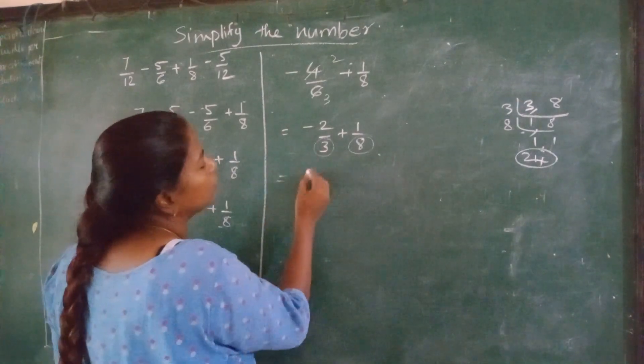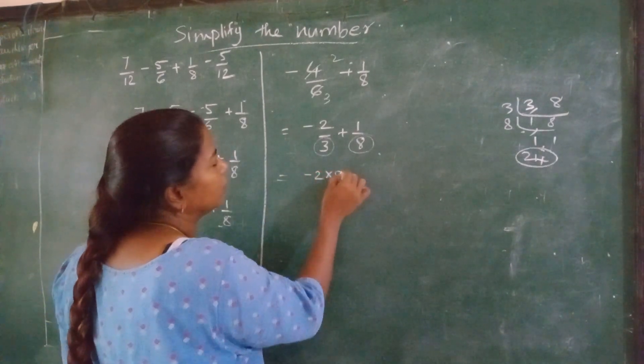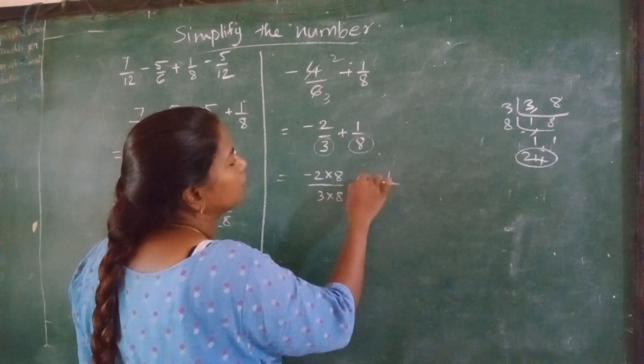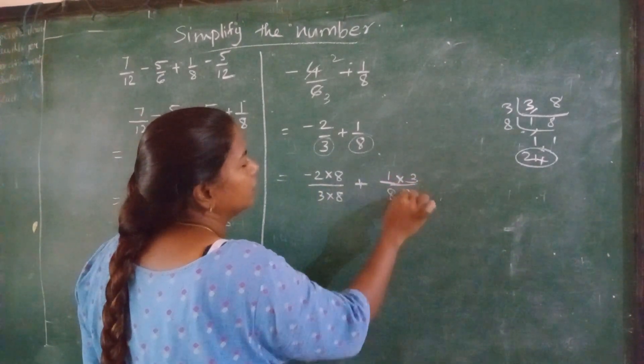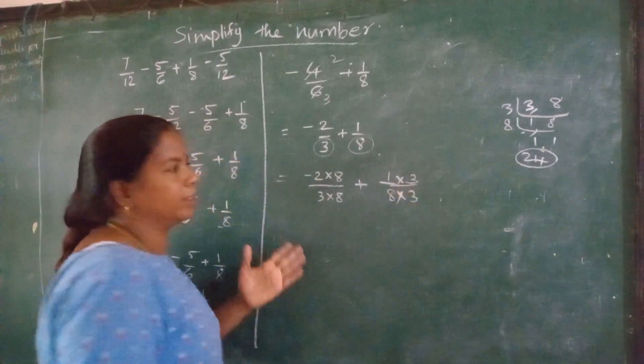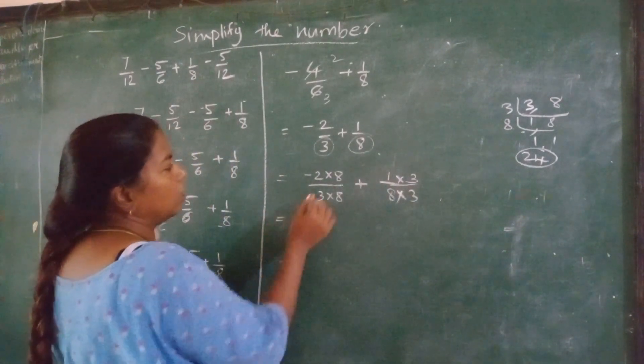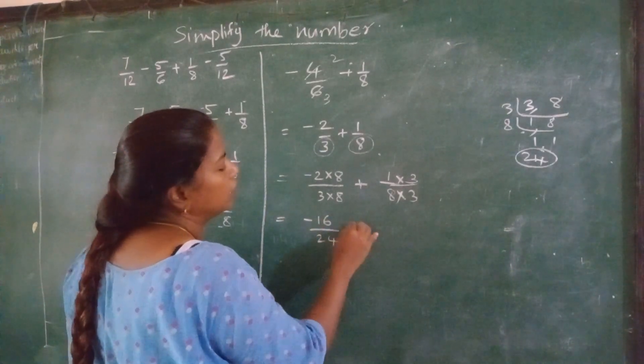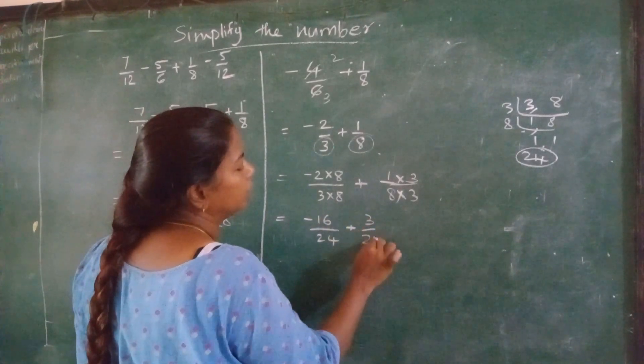Now minus 2 multiplied by 8 upon 3 multiplied by 8 plus 1 multiplied by 3 upon 8 multiplied by 3. Got it? Now 8 twos are 16. Minus 16 upon 24 plus 3 upon 24.